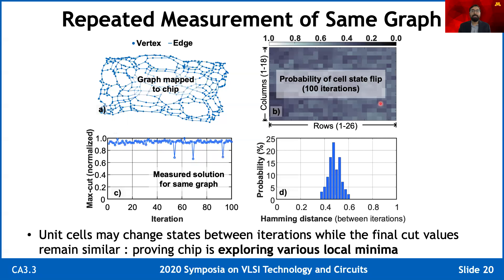Now let's look at some measured results. We programmed the chip with one graph, measured the result, reprogrammed, and repeated that 100 times. Individual cell states can change in each iteration. We normalized the chip solutions with results from a commercial software, and the max cut values were very consistent despite the solutions changing in every iteration. We looked at the Hamming distance and found the solutions were indeed very different, with the distribution around 0.5. This experiment verified that the chip was probabilistically exploring various minima, which is a necessary criterion to solve difficult problems.